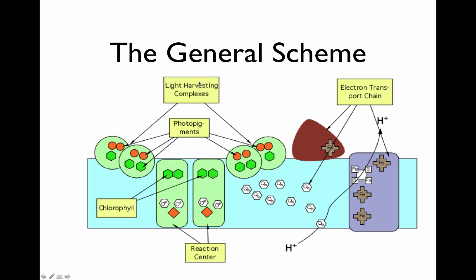Here's the general scheme. You have light harvesting complexes that collect light in photopigments. These photopigments focus it on a special pair that focuses that energy on the reaction center. It boosts that electron, which then goes to the electron transport chain and quinones.